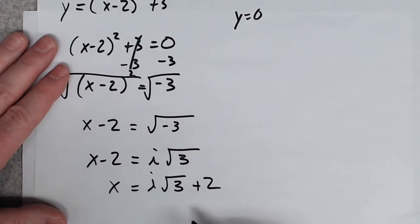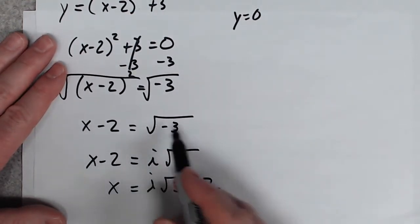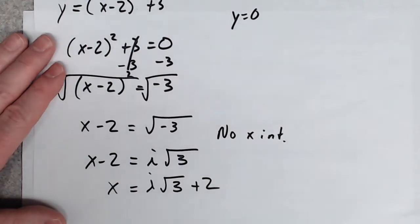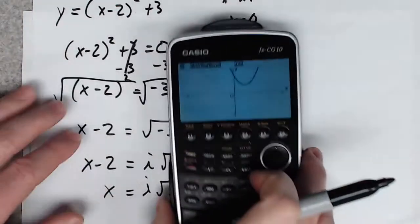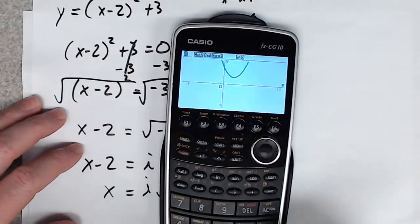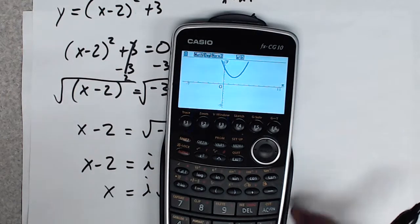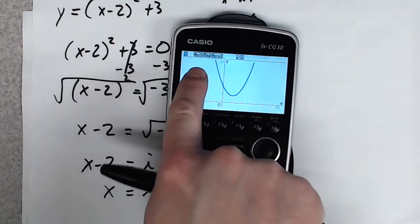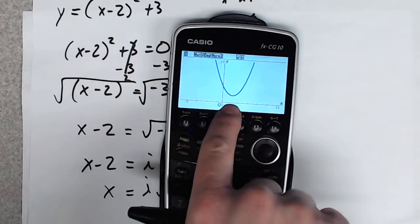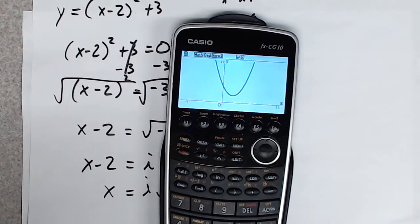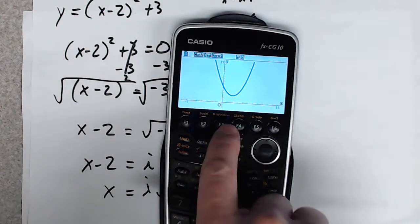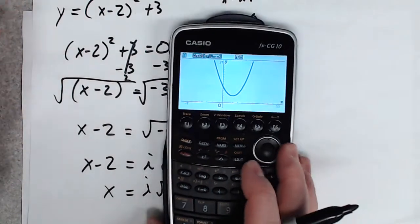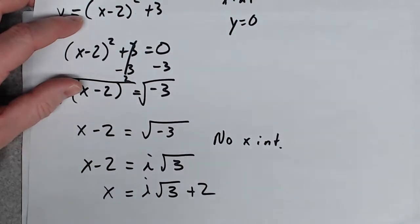If you wind up with the square root of a negative, there are no x-intercepts. Looking at the graph of (x minus 2) squared plus 3, it doesn't go below the x-axis — it opens upward and never touches it. So you can have an answer of 'none' — there are no x-intercepts.